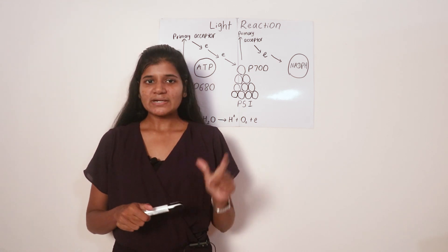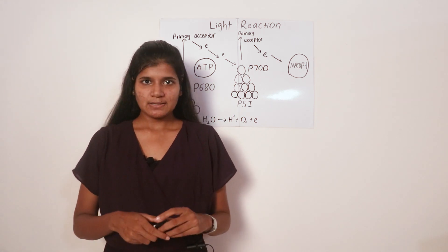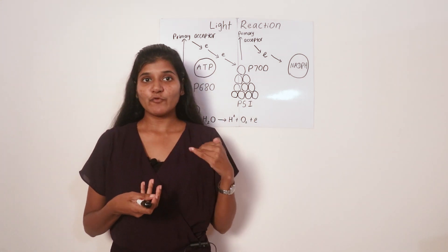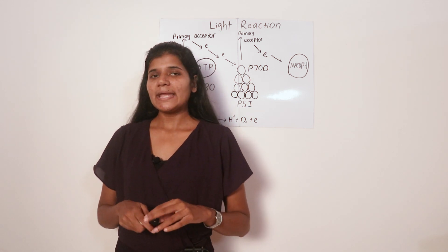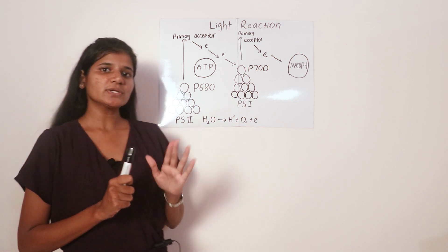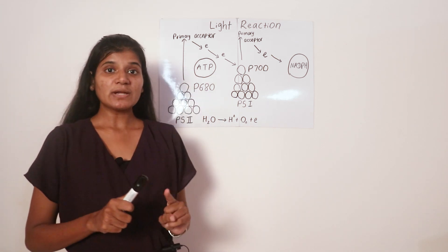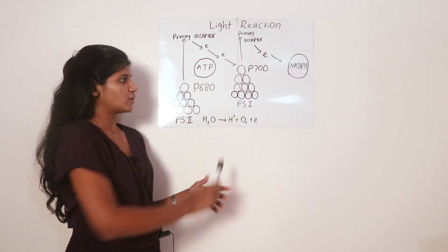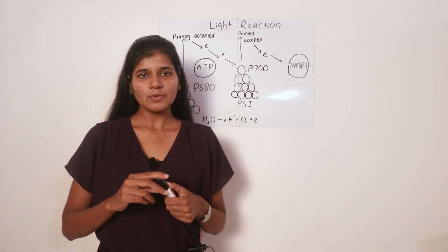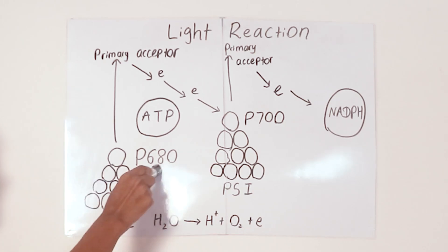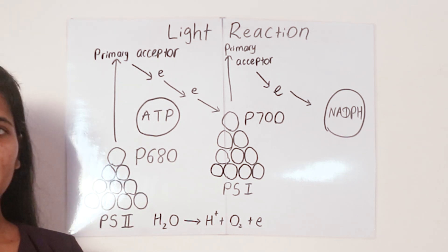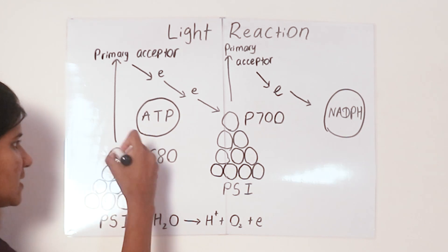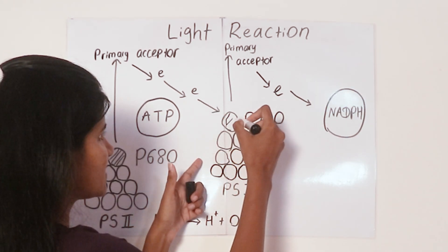These photosynthetic pigments are organized into a complex on the thylakoid membrane called a photosystem. In a photosystem we find chlorophyll A, chlorophyll B, carotenoids, and electron acceptors. There are two types of photosystems: photosystem 1 (PS1) and photosystem 2 (PS2). Each photosystem has a light-harvesting complex and a central pigment called the reaction center complex.